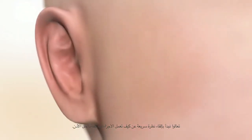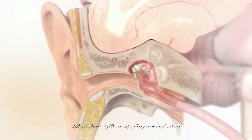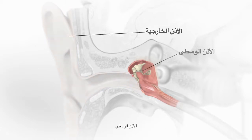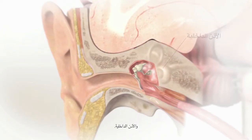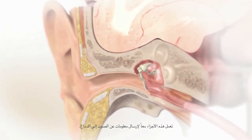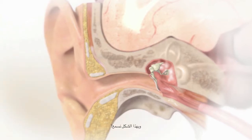Let's begin by reviewing how different parts of the ear work. The ear has three parts: the outer ear, the middle ear, and the inner ear. These parts work together to send information about sounds to the brain. This is how we hear.